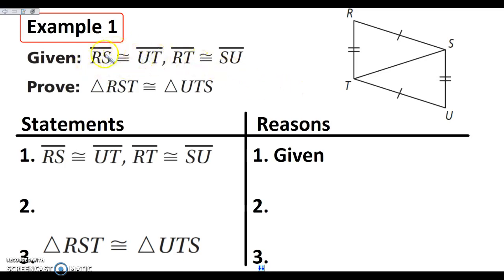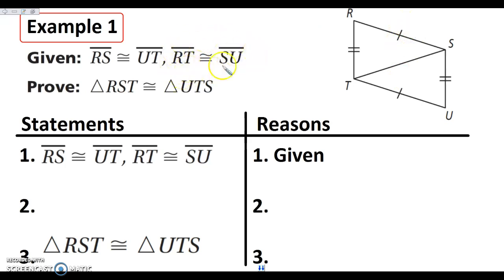We're given that RS is congruent to UT — here's RS and here's UT, and they are marked as congruent. We are also told that RT is congruent to SU, and they are also marked as congruent with double tick marks.